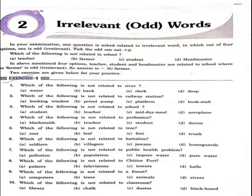Fourth question: which of the following is not related to profession? Options are goldsmith, teacher, student, doctor. The right option is student. The rest of the three earn money, but students do not earn money — they only study. So the odd option is C, student.